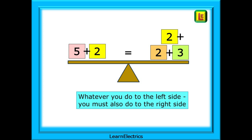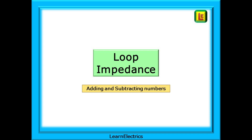Whatever you do to the left side, you must also do to the right side. Here we've added 2 to the left side, and now we must add 2 to the right side to keep things balanced. And that's all that there is to it. Before we get to the adiabatic equations, let's start with a very simple loop impedance formula with which we should all be familiar — a formula where all that we need to do is add and subtract numbers.